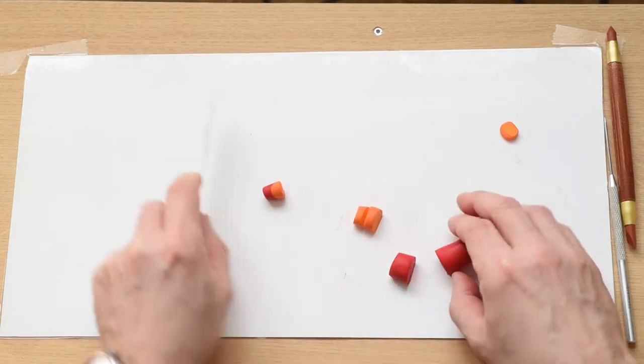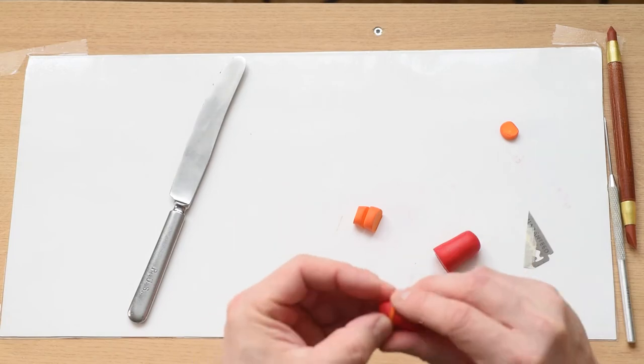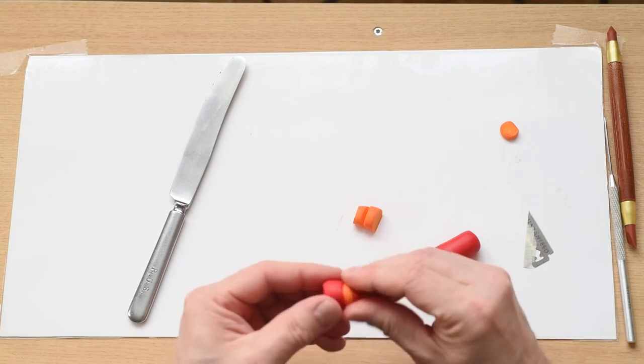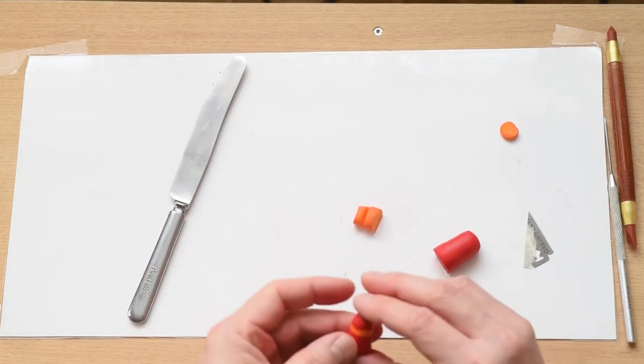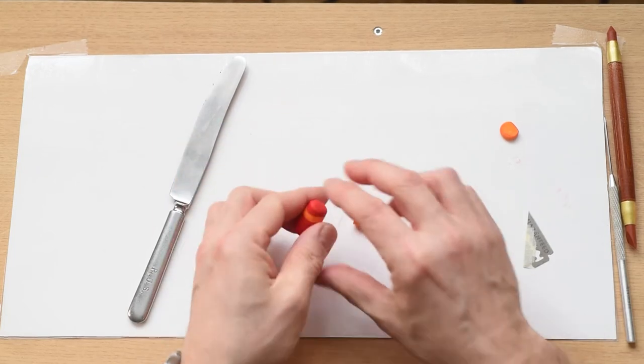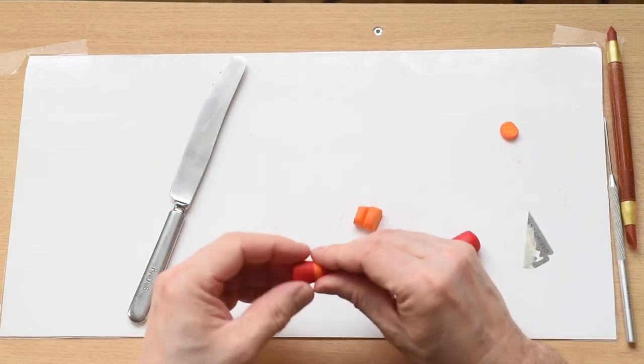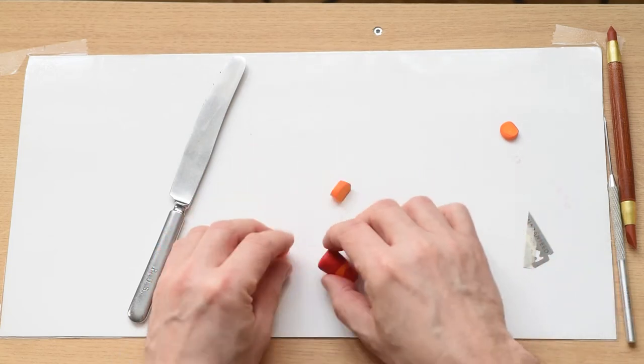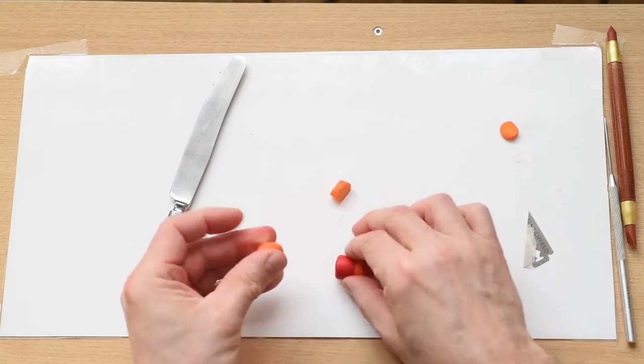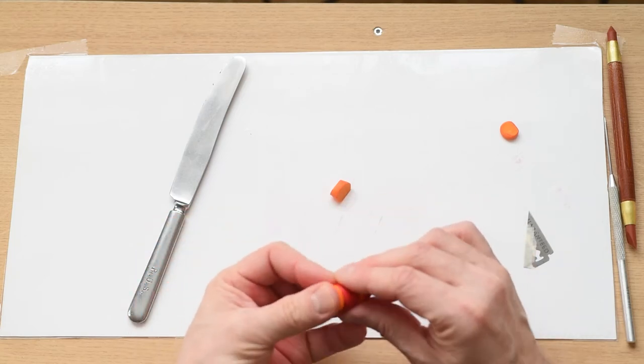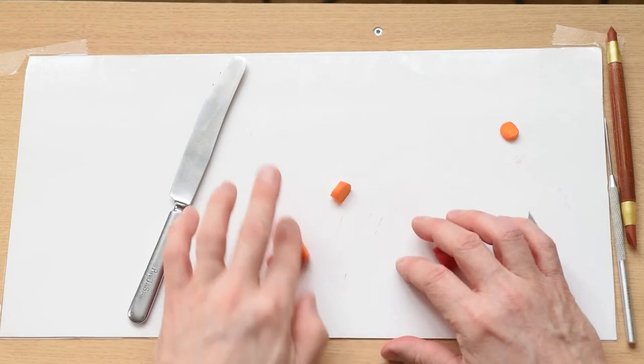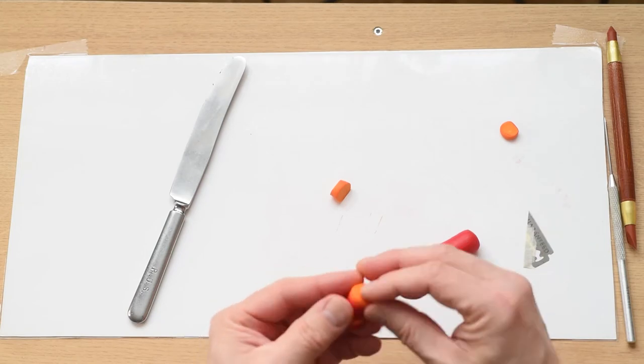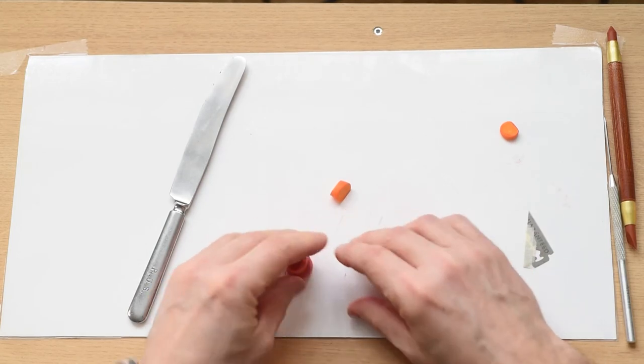The first thing I do is make stripes: red and orange, red and orange, and so on. Roll and push against your surface. This way it sticks really good and you can control the way the stripes look.